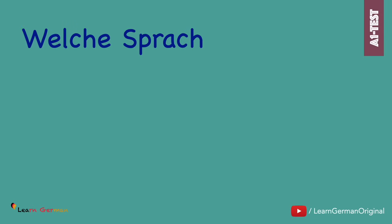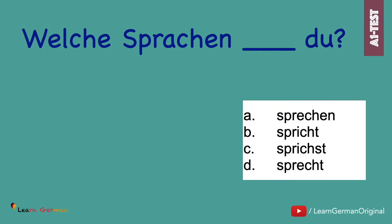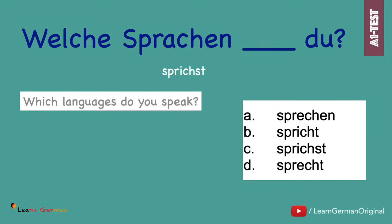Here's the third one. Welche Sprachen... du? Here again the verb has to be conjugated correctly. And your answer is: Welche Sprachen sprichst du?